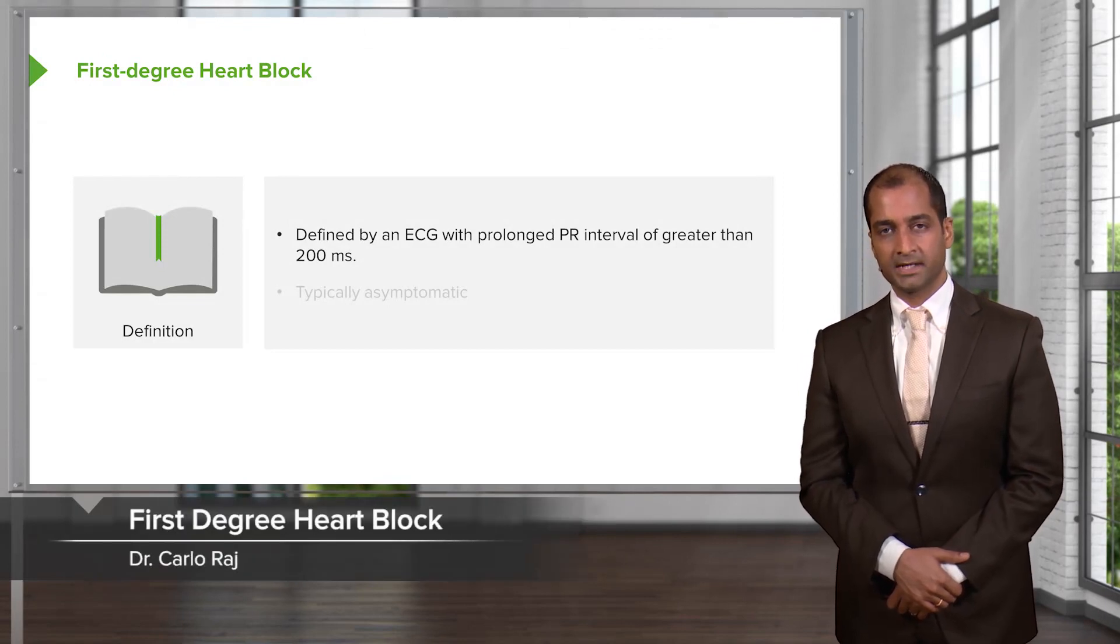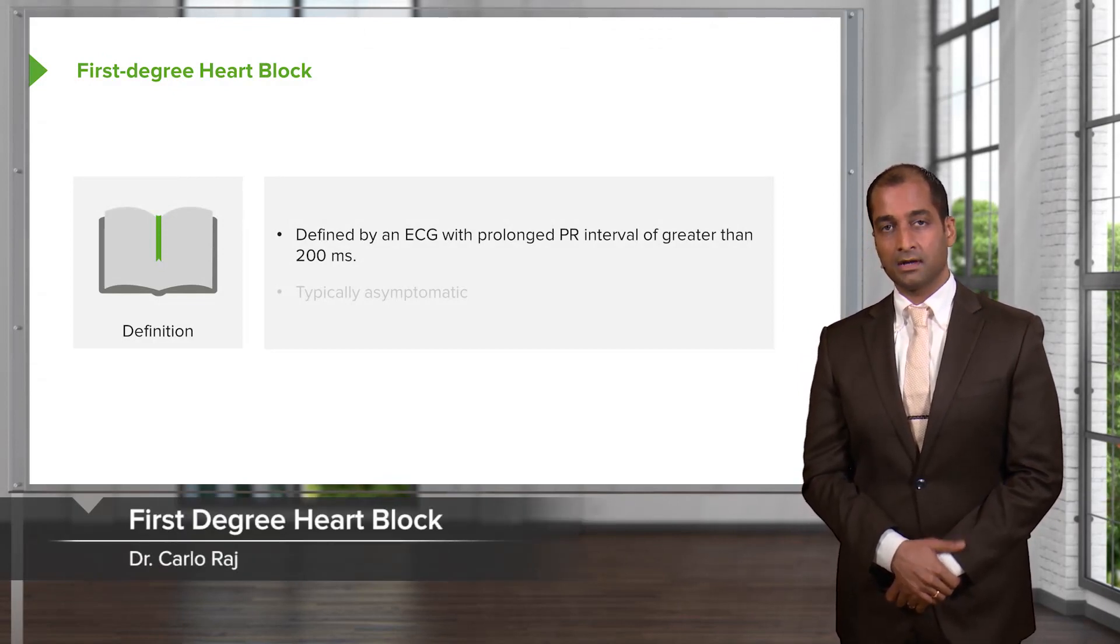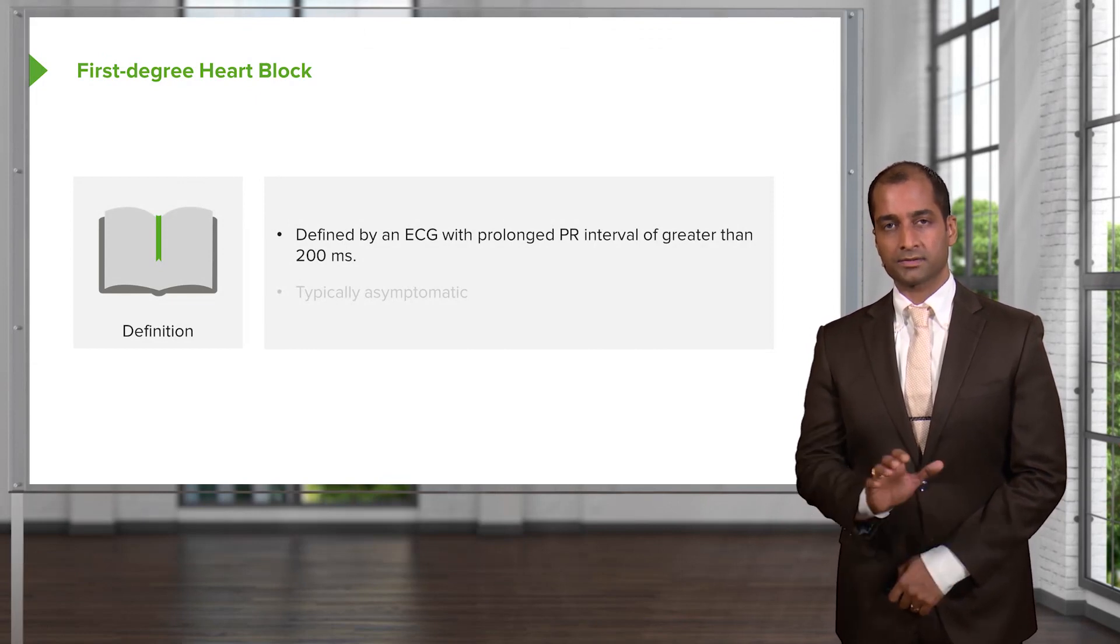First-degree AV block. What does this mean? Defined by an ECG with prolonged PR interval.